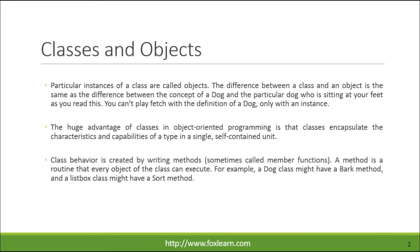Particular instances of a class are called objects. The difference between a class and an object is the same as the difference between the concept of a dog and the particular dog who is sitting at your feet as you read this. You can't play fetch with the definition of a dog, only with an instance.